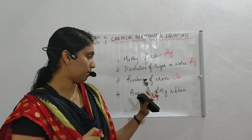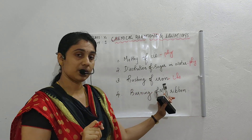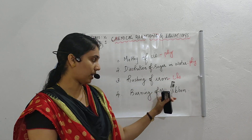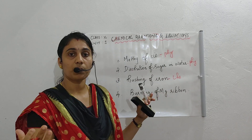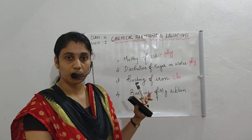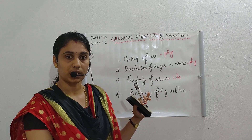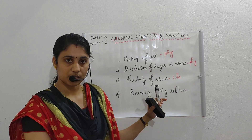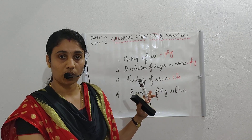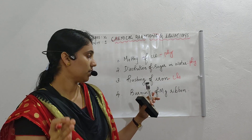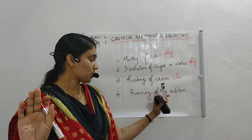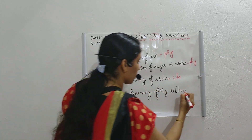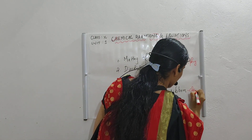The fourth one: burning of magnesium. Magnesium burning means combining with oxygen — combustion — combining with oxygen to form a new product of white color, as you can observe after burning. That new substance formed is magnesium oxide. So the fourth one is also a chemical change.